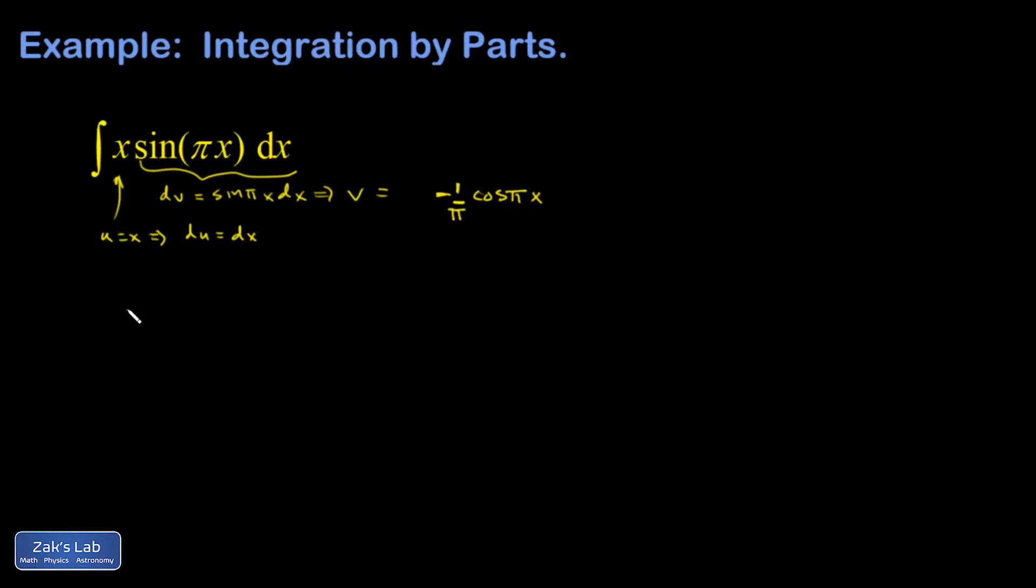So applying integration by parts, I get uv. So x, I guess I'll write it this way, times negative one over pi cosine pi x minus the integral of v du.